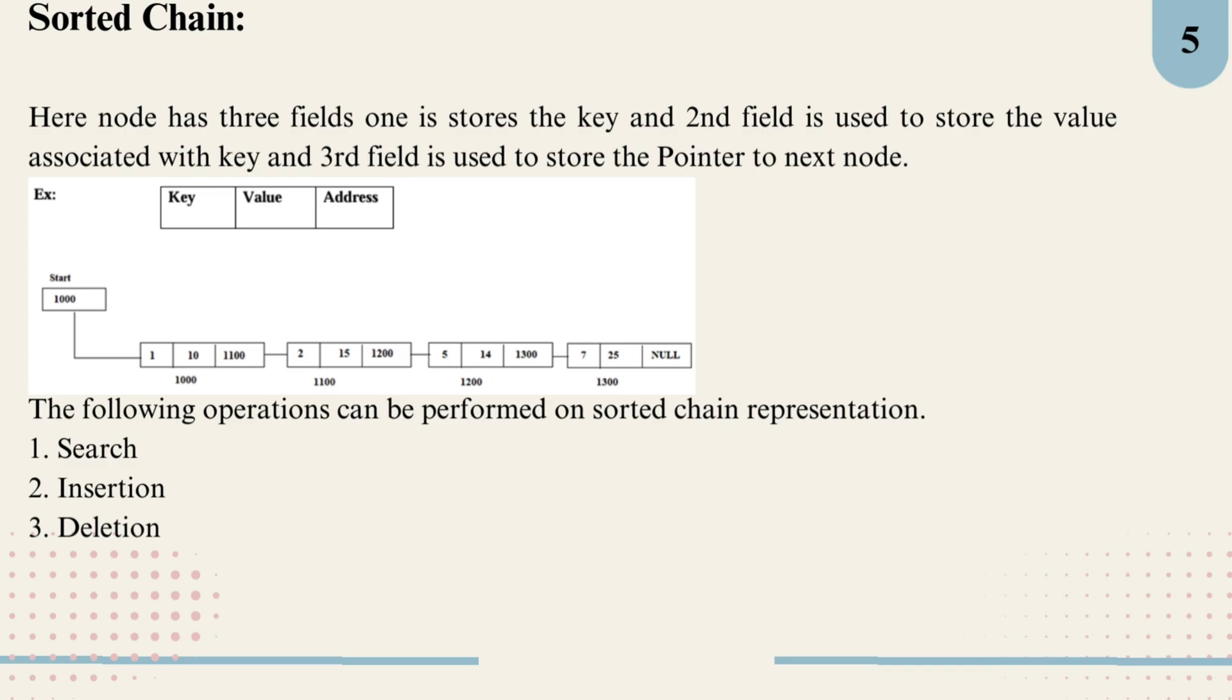With this sorted chain setup we can perform the following operations: search, we can traverse the list to find a specific key-value pair; insertion, adding a new key-value pair while keeping the list sorted; and deletion, removing a key-value pair from the list which may involve adjusting pointers to keep the chain linked. The sorted chain provides more flexibility for insertion and deletion elements, but searching may be slower compared to a sorted array.